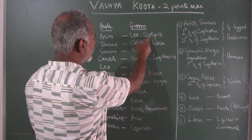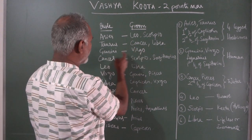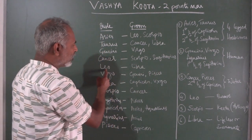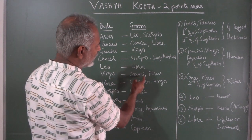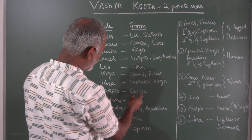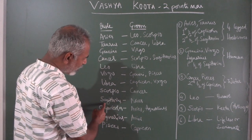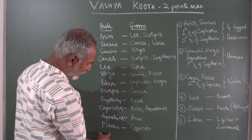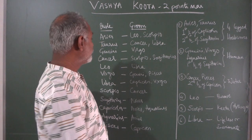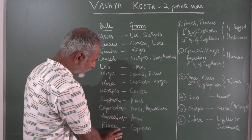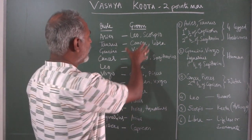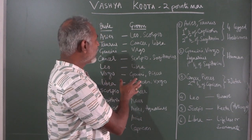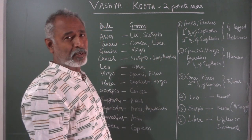Aries matches with Leo and Scorpio. Taurus matches with Cancer and Libra. Gemini matches with Virgo. Cancer matches with Scorpio and Sagittarius. Leo matches with Libra. Virgo matches with Gemini and Pisces. Libra with Capricorn and Virgo. Scorpio with Cancer. Sagittarius with Pisces. Capricorn with Aries and Aquarius. Pisces with Capricorn. So if this is the girl's rashi where the moon is placed and this is the boy's rashi where the moon is placed in the horoscope, then the matching is good and we give two points in the Kuta system.